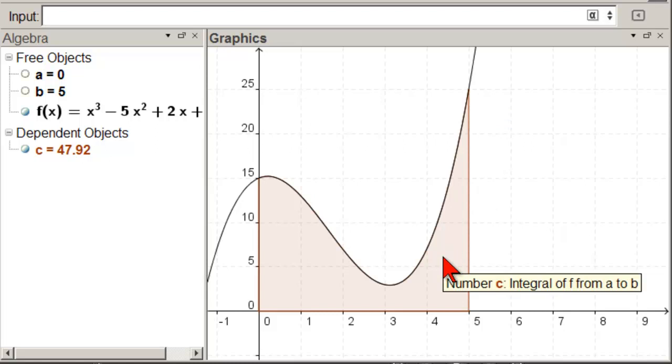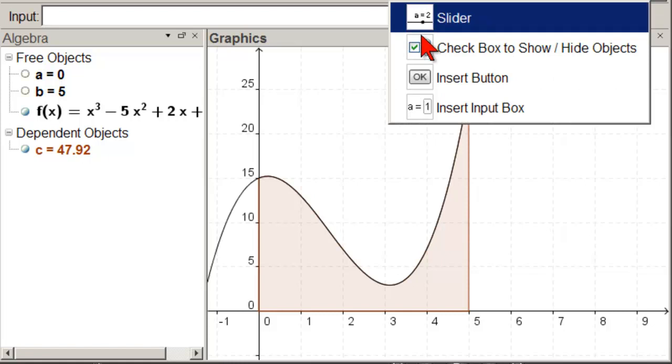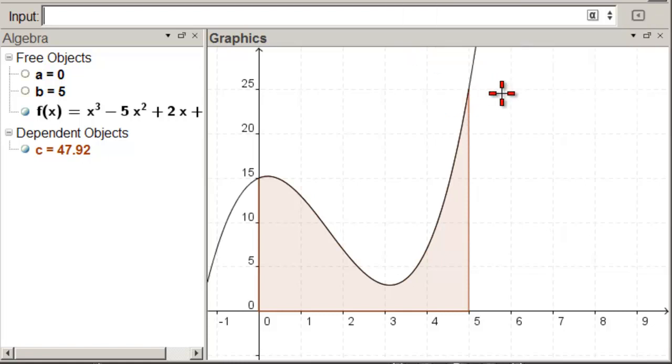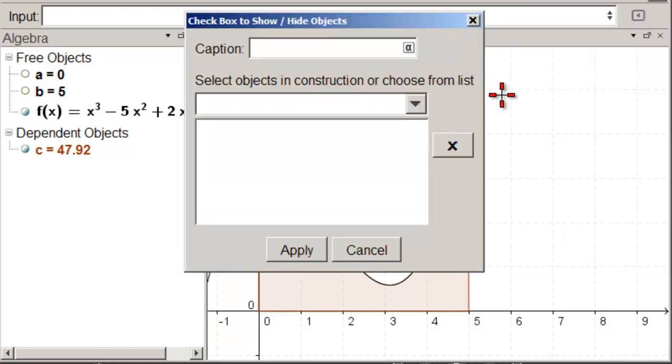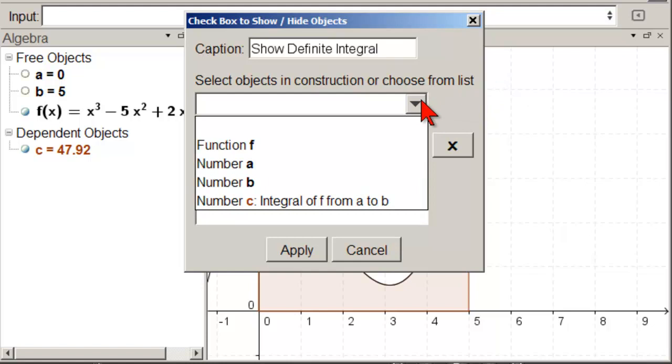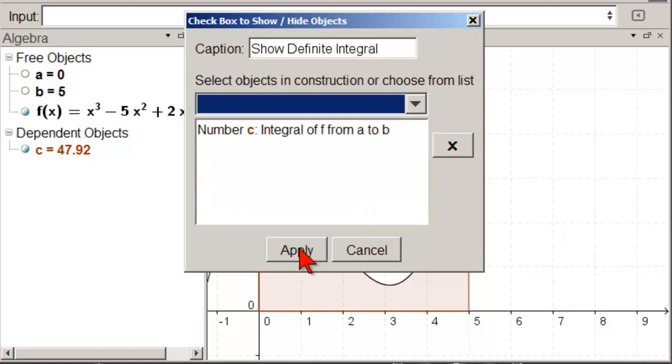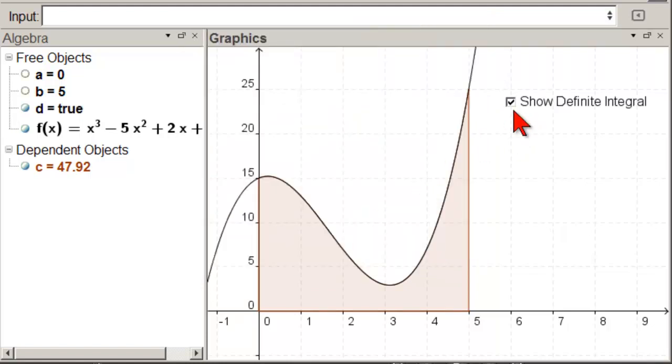So now we're going to put a checkbox, so whether we want to see that or not. So let's go over here and get a checkbox. Click over here and Show Definite Integral. Come in here and choose C, the integral. And now get the Move tool, and we can turn it off and on. So we're done with the exact definite integral part.